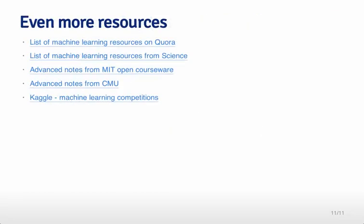There's actually a huge amount of information available out there on machine learning — it's a very hot topic right now. I've listed here a bunch of links that send you to information at Quora, Science, MIT, CMU, and Kaggle, which will give you a lot of information about how to do machine learning in a variety of different ways. If this class whets your appetite and gets you excited about some of these other things, that would be great too.